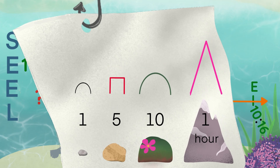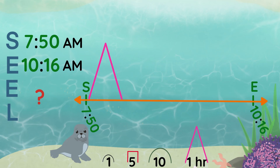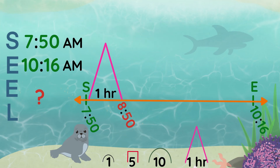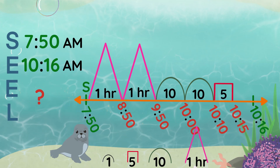Using this chart, we can do time hops until we reach 10:16. Let's try it! First, we will try an hour hop — let's draw a mountain. 7:50 plus 1 hour equals 8:50. Since we haven't reached 10:16, we're going to do another hour hop to 9:50, labeling the time as we go. If we hop one more hour, that's 10:50 and too far. So we'll hop 10 minutes, drawing a hill, to get to 10:00. Now we can hop 10 minutes to 10:10. Finally, we'll hop 5 minutes to 10:15 and 1 pebble hop to 10:16.